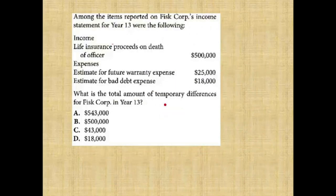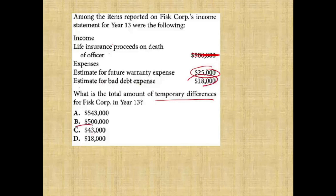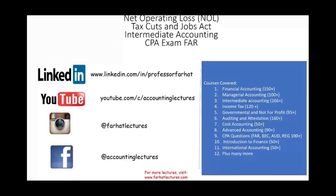What's the total temporary difference for FISC? Life insurance policies — that's permanent. Estimated future warranty expense — yes, temporary. Estimated future bad debt — temporary. The answer is C, $43,000. If you have any questions about this topic, please let me know. In the next session I will start to work with NOL or net operating losses based on the Tax Cuts and Jobs Act. This topic will be covered in intermediate accounting. I strongly encourage you to visit my website and subscribe — it's an investment in your career. Good luck and study hard for your CPA.